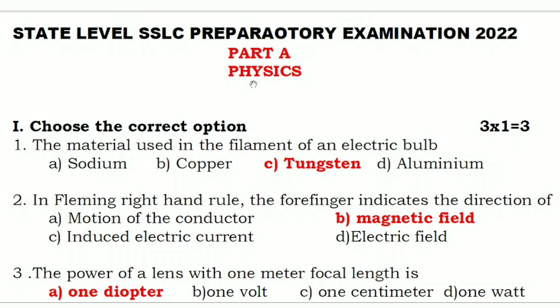First, I am going to explain Physics. In Part A — Choose the Correct Option — there are three questions, each carrying one mark. First question: the material used in the filament of an electric bulb. Option A: sodium, Option B: copper, Option C: tungsten, Option D: aluminium. In the electric bulb, the filament is made of tungsten, so Option C — tungsten — is the correct answer.